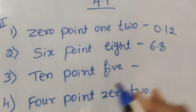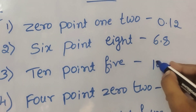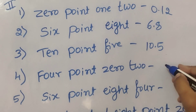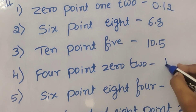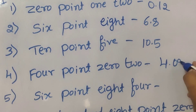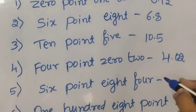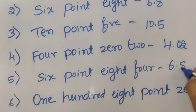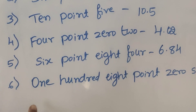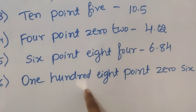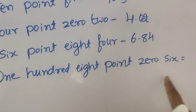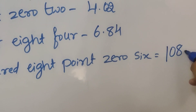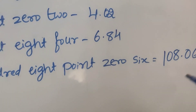Third one: ten point five — 10.5. Fourth one: four point zero two — 4.02. Fifth one: six point eight four — 6.84. Last one: one hundred eight point zero six — 108.06.